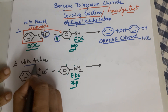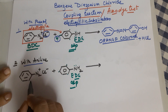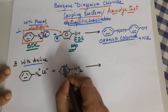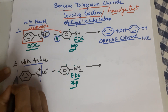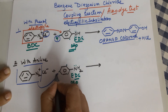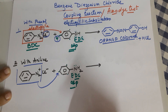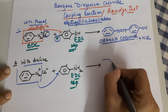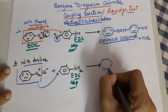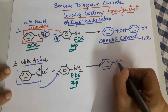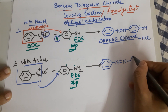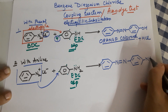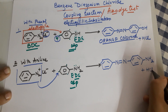Now the same thing if we do it with aniline: if you add your benzene diazonium chloride to aniline, the reaction is exactly the same. Aniline being an electron donating group is ortho-para directing. This diazonium group is your electrophile and it attacks at the para position, which is electron rich and sterically less hindered. So your product again in this case has a benzene ring, you have nitrogens, you have the next benzene ring for the aniline, and this is the structure of your product formed.